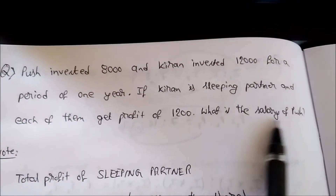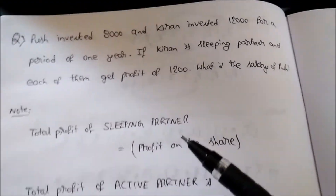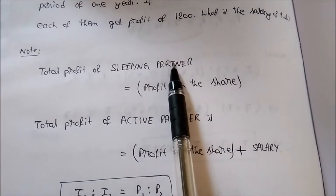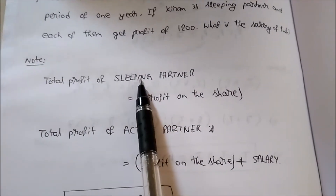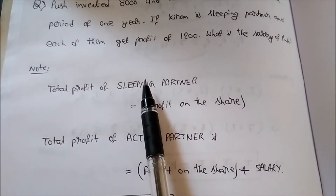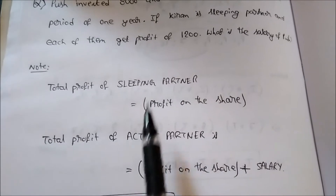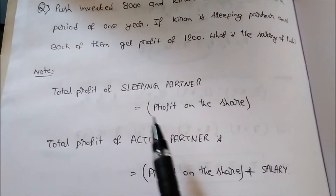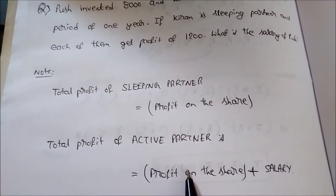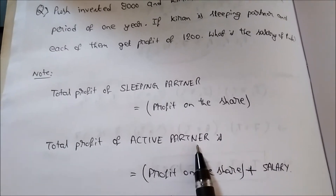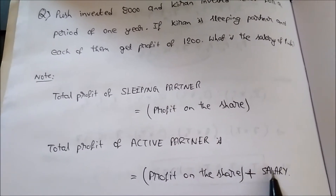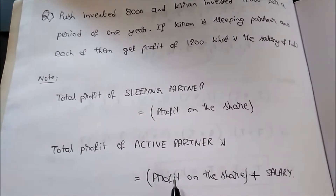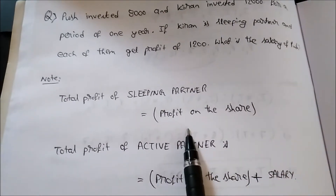In a business there are two types of investors — sleeping partner and active partner. A sleeping partner just invests money and takes profit or loss based on the share invested. An active partner works like an employee in a firm — he makes an investment and also works for the business. So he gets profit on the share, plus a salary for working. That is the difference: a sleeping partner gets profit on share only, while an active partner gets profit on share plus salary.